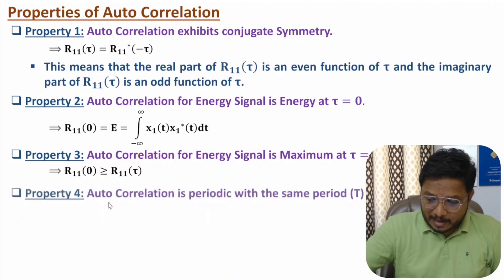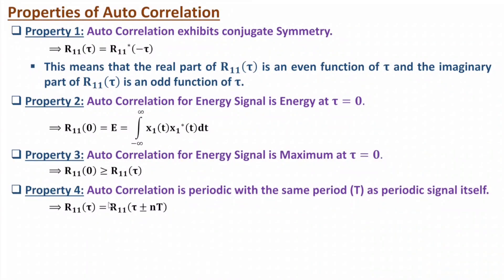The next property is based on periodicity. Auto correlation is periodic with the same period T as the periodic signal itself. So if you have a periodic signal X(t) and you compute auto correlation R₁₁(τ), that is also periodic with the same duration T. Therefore R₁₁(τ ± nT) holds — it is periodic with respect to duration T.